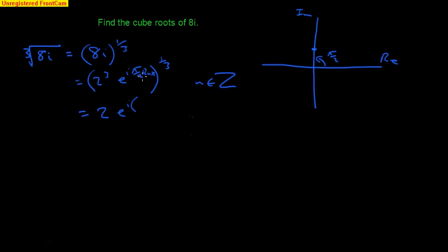And then we get e to the i. I'll put this in brackets, the angle now. It's 1 third of all this lot. That'll give us pi by 6 plus 2n pi by 3. That's just multiplying a third into all of that angle there.